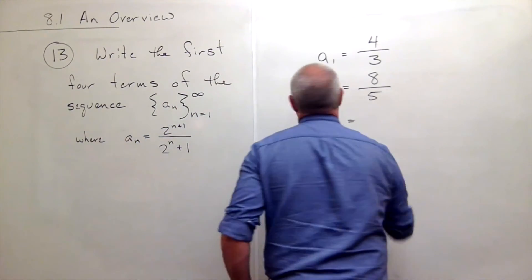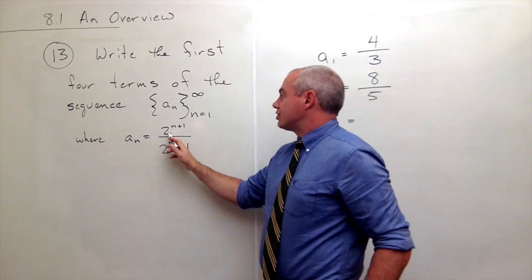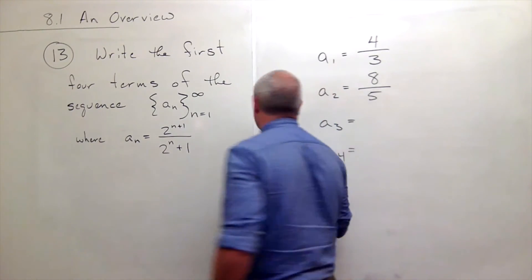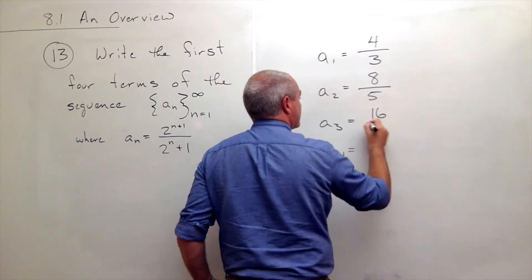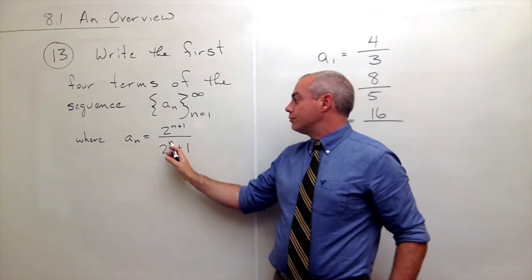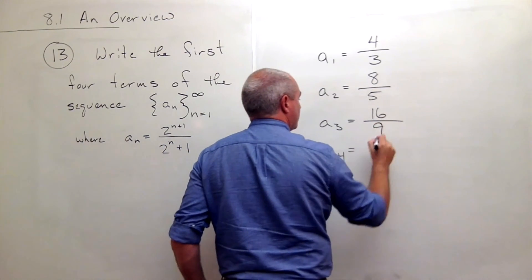For a3, I could do something similar. For a sub 3, I get 2 to the 3 plus 1, in other words 2 to the fourth. 2 to the fourth is 16, and on bottom I plug in 3, so 2 cubed is 8, plus 1 is 9.